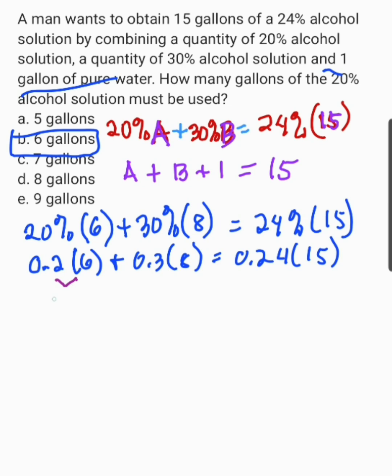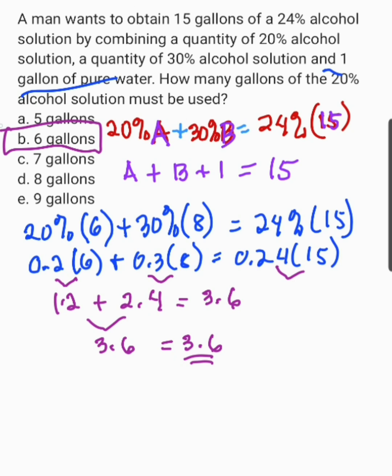Plus, 0.3 times 8. And this is 2.4. 0.24 times 15. And this is 3.6. Kung i-add natin itong 1.2 plus 2.4. And this is 3.6. Which is exactly equal to 3.6 dito. So, therefore, yung sagot natin, 6 gallons ay tama.